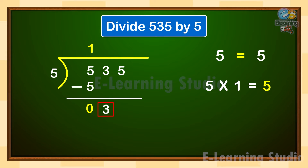the dividend and write on the right side of the remainder. So the new dividend is 3. But 5 is greater than 3, so put a 0 as the next digit of the quotient, and bring down the next digit of the dividend. Write it on the right side of the remainder, so the new dividend is 35.